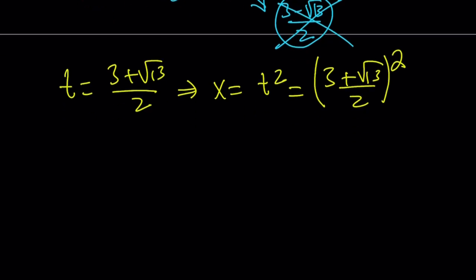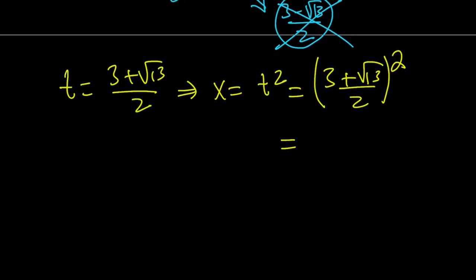To square that, I'll just square the numerator. 9 plus 6 root 13 over 4. And now this can be written as 22 plus 6 root 13 over 4. I can divide everything by 2 and write this as 11 plus 3 root 13 over 2. So that's going to be my x value.